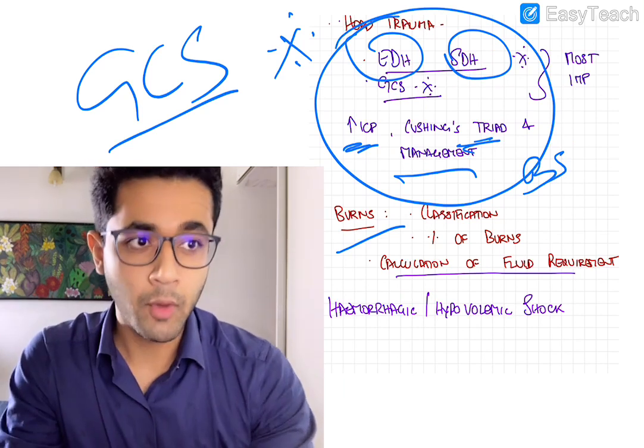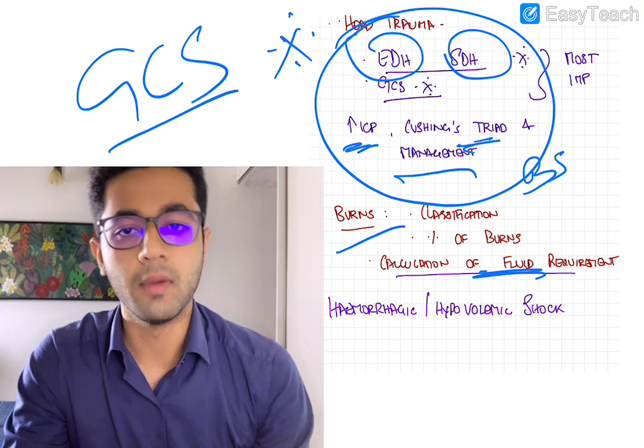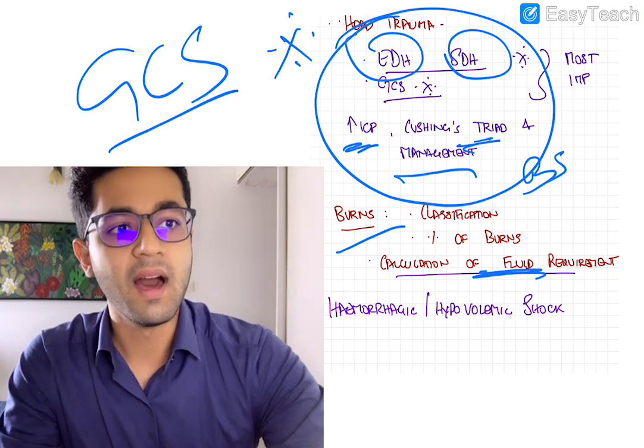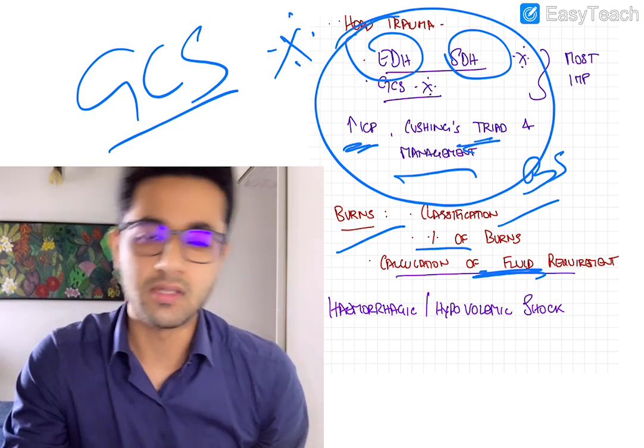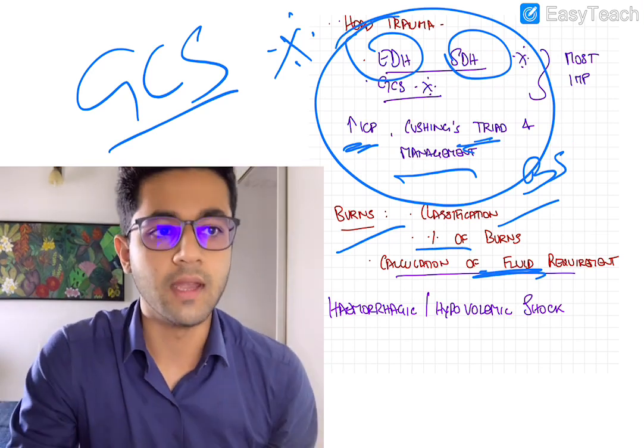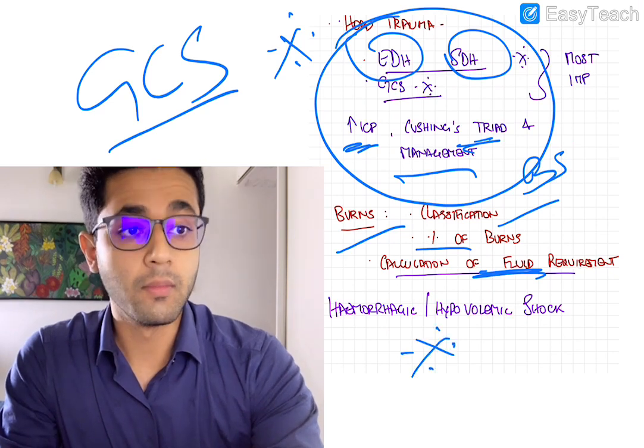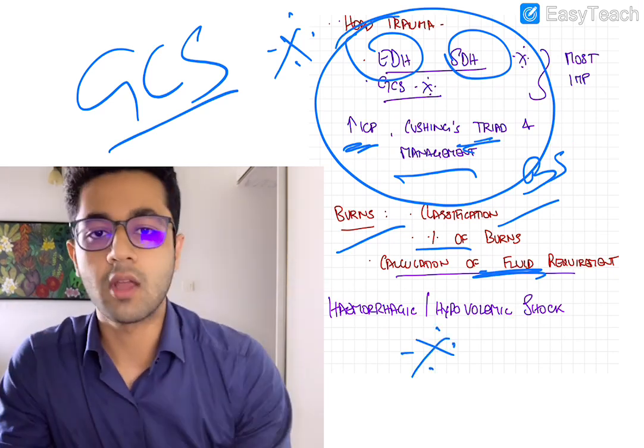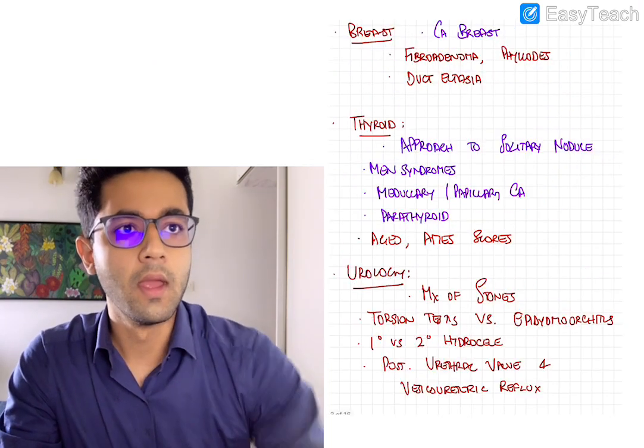So next, in burns, the really important part is knowing about fluid calculation or calculating the fluid requirement for burns, particularly the Parkland formula. Other than that, the degree of burns, that is a classification of burn and the percentage of burns in this, particularly the Wallace rule of nine. So all of this is very important for the exam. Again, one of the most important topics for any exam per se is a hemorrhagic and hypovolemic shock. So you have to know shock in and out.